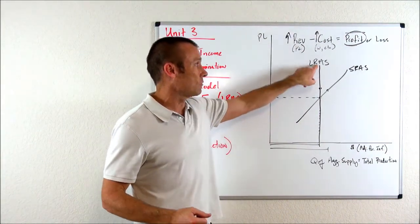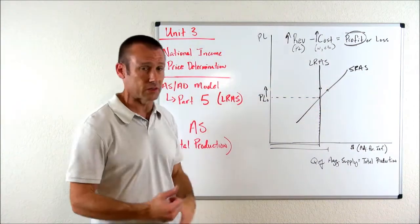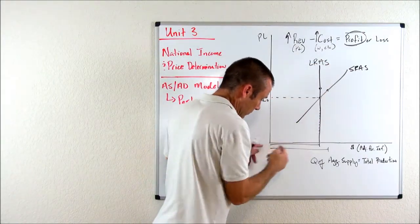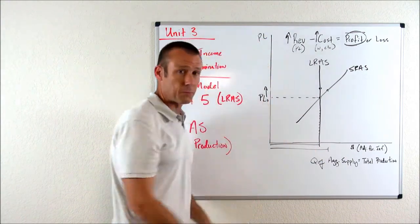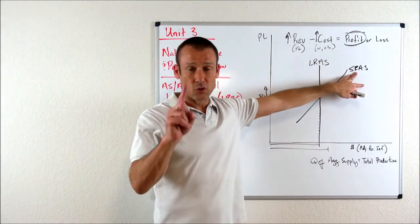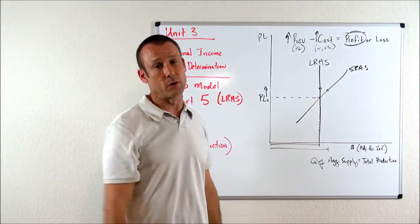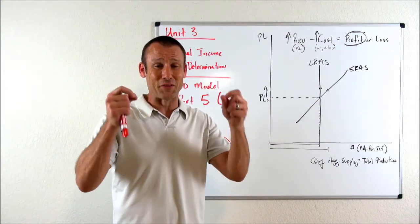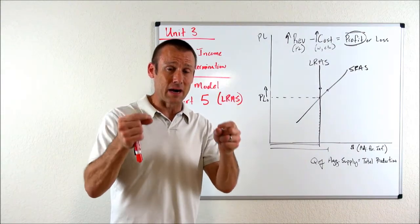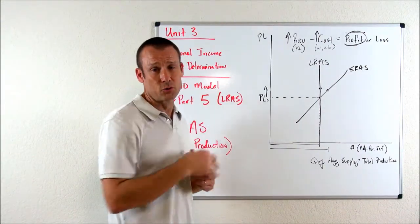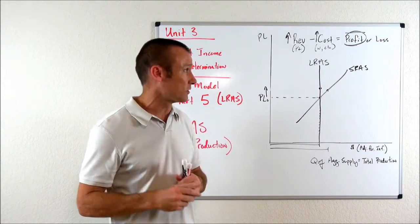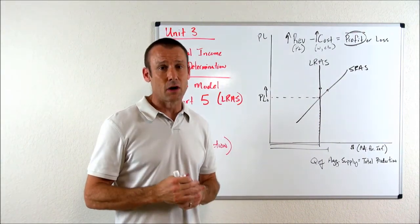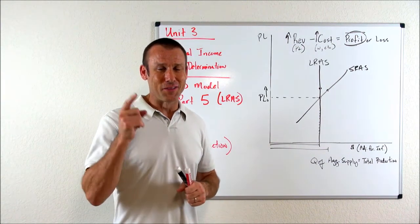In the long run, total production does not change when the price level changes. The price can go up or down and total production is going to be vertical — the same horizontal distance no matter what the price level is. However, in the short run, total production will change when the price level changes, because the cost of production — especially wages — lag behind the change in the price level. Those are our two total production curves, our two aggregate supply curves, and they give us the definition of the short run and the long run for macroeconomics. Thanks for tuning in. We'll see you in the next video.